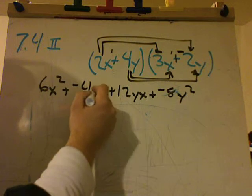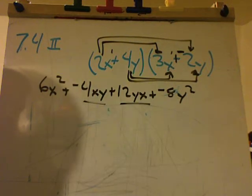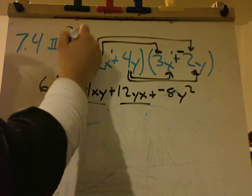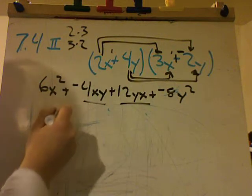Even though right here this goes xy and this one goes yx, they're still like terms. Because remember, when you're multiplying things, 2 times 3 is the same thing as 3 times 2. So I can move those around as I want. So these two here are like terms.